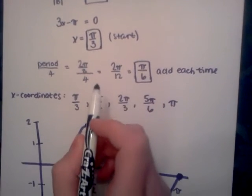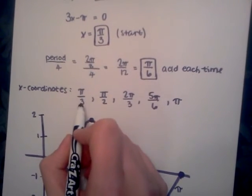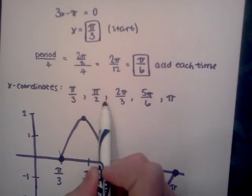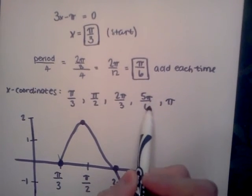Your x coordinates are, you start with pi over 3, and you add pi over 6 each time. So it's pi over 2, 2 pi over 3, 5 pi over 6, and pi.